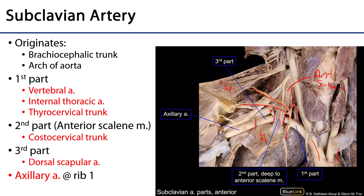Behind the anterior scalene we have the second part, which has but one branch: the costocervical trunk. The costocervical trunk has a branch serving deep neck muscles as well as a branch called the superior intercostal artery, serving the first two intercostal spaces with blood.